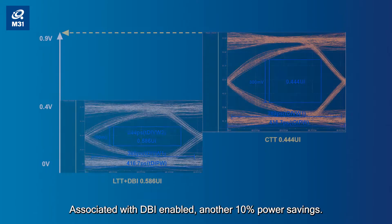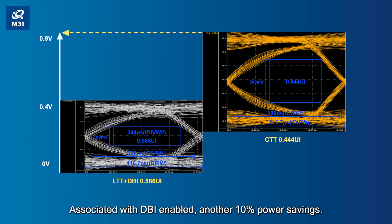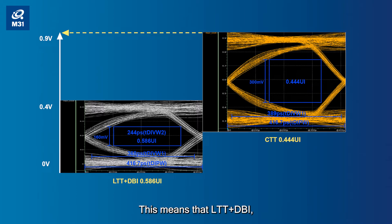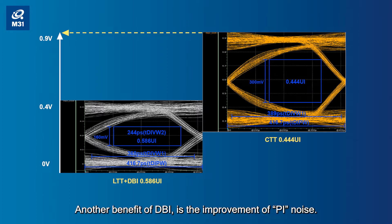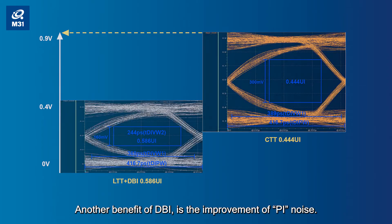Associated with DBI enabled, another 10% power saving is achieved. This means that LTT plus DBI results in a 55% power reduction from CTT. Another benefit of DBI is the improvement of PI noise.